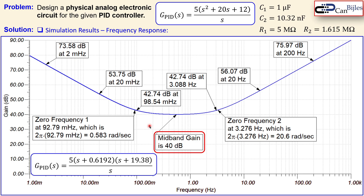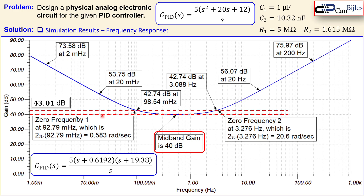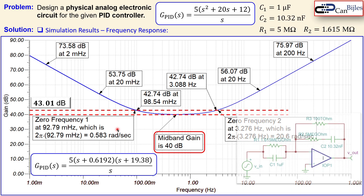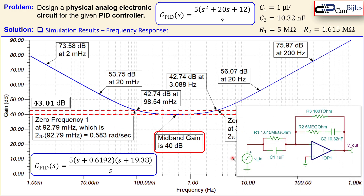The small discrepancy arises because the poles and mid-band gain are not sufficiently separated, so they influence each other and the simple approximation is not exact. However, the result is very close and will do the job after a little fine-tuning. The circuit with these four components achieves the desired PID controller transfer function.